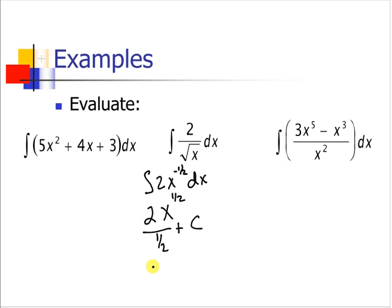Now we simplify: 2 divided by 1/2, which is 4, x to the 1/2 plus C, or we get 4 square root of x plus C.